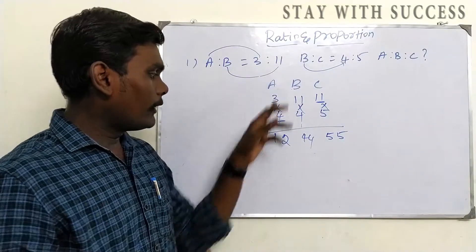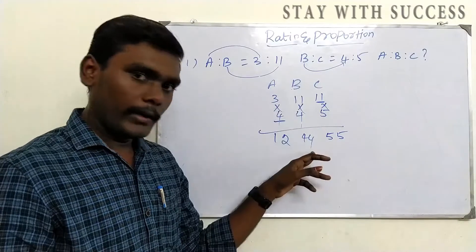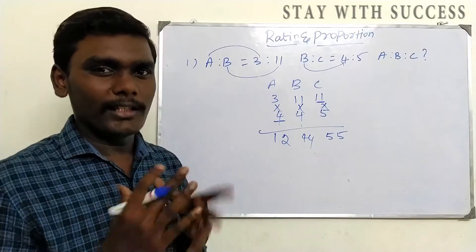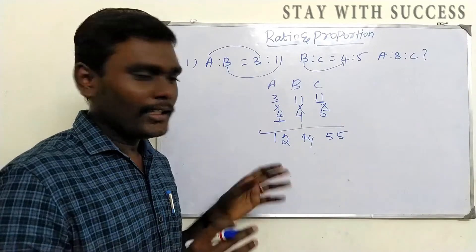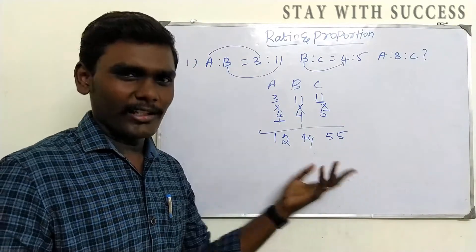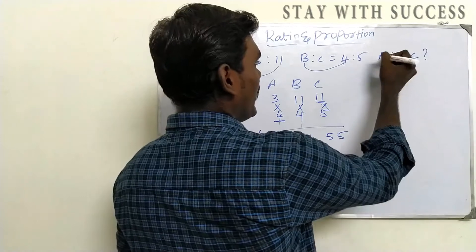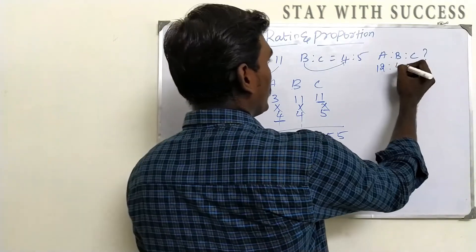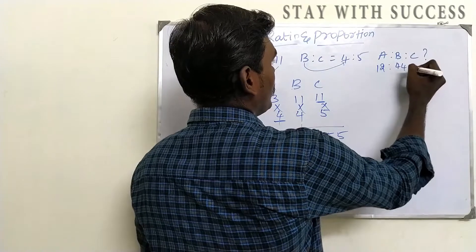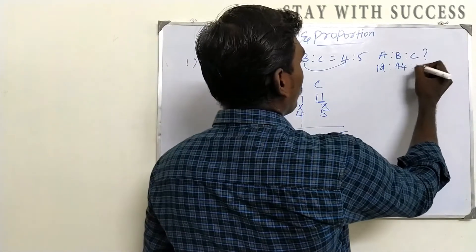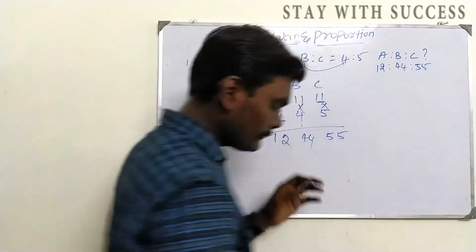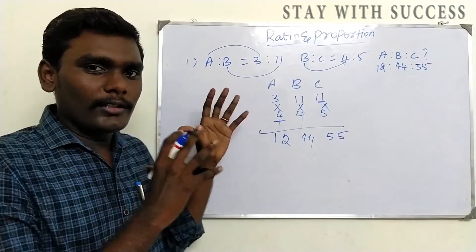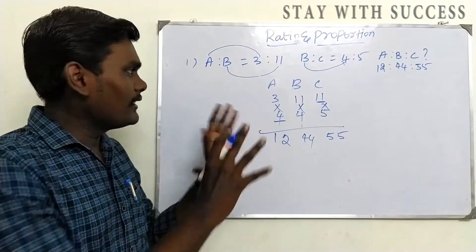So A value is 12, B value is 44, C value is 55. If we have the ratio A to B to C, the answer is 12 is to 44 is to 55. This is the answer. If we have this pattern, we will use this idea.